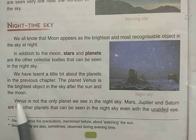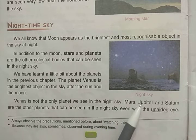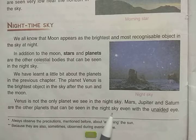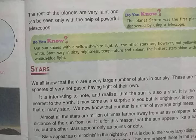Venus is the brightest object after the Sun and Moon. Venus is not the only planet we see in the night sky — Mars, Jupiter, and Saturn are other planets that can be seen with the unaided eye. The rest of the planets are very faint and can be seen only with the help of a powerful telescope.